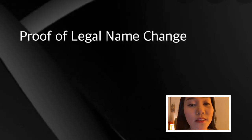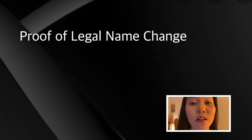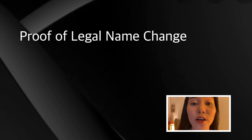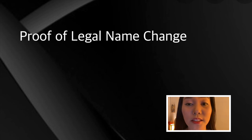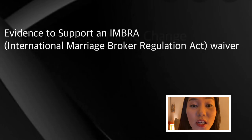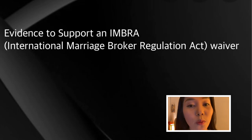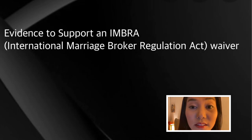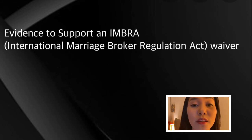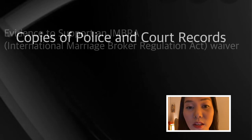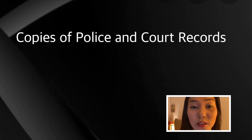Number nine, proof of legal name change — this is only applicable if either party has had other legal names. Number ten, evidence to support an IMBRA or International Marriage Broker Regulation Act waiver — this is only applicable if you have met through a marriage broker. Number eleven, copies of police and court records — this is only applicable if either party has been convicted of certain crimes.